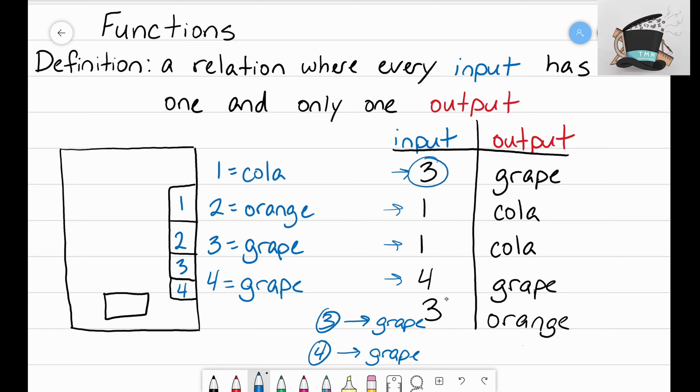Because when I did that one time I got grape, and the other time I got orange. So I want us to be able to see that difference. We've altered this problem and now when I hit three I either get grape or I get orange, and that's what makes it not a function.